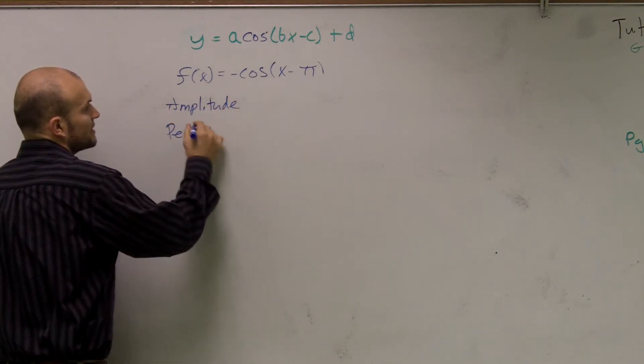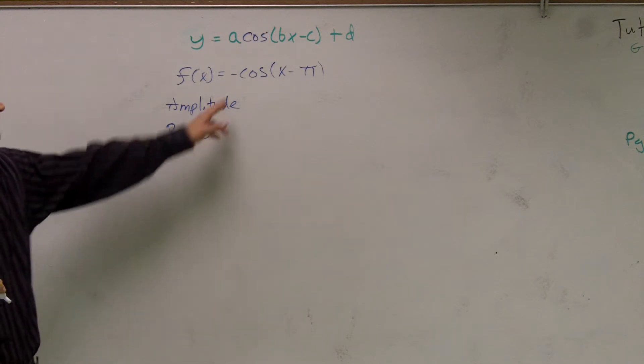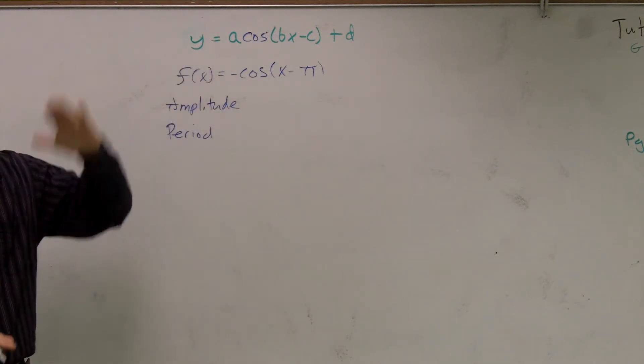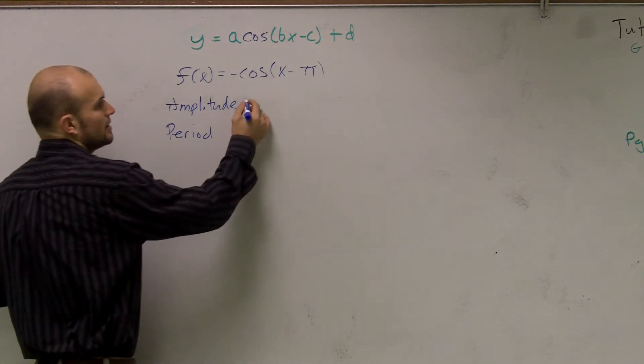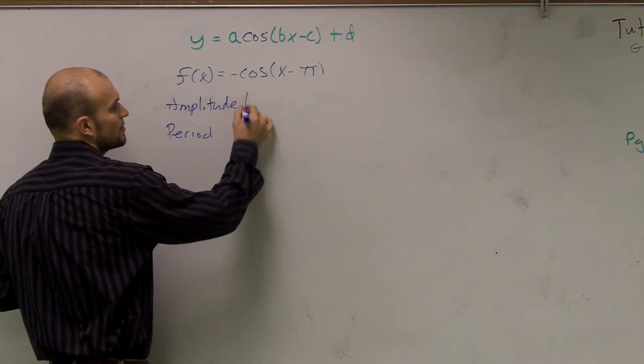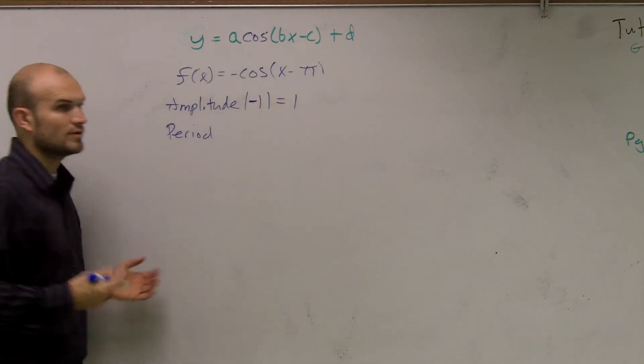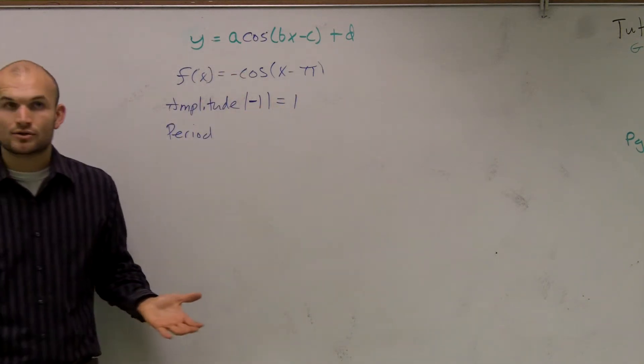Now, this problem is fairly easy as I'm looking at it. I don't really have a number in front of my cosine except for negative one, right? But that's not really going to extend it anywhere larger than up one or down one. So I'm going to take the absolute value of my a, which is negative one, which is going to leave me one, which is the amplitude of your regular graph.